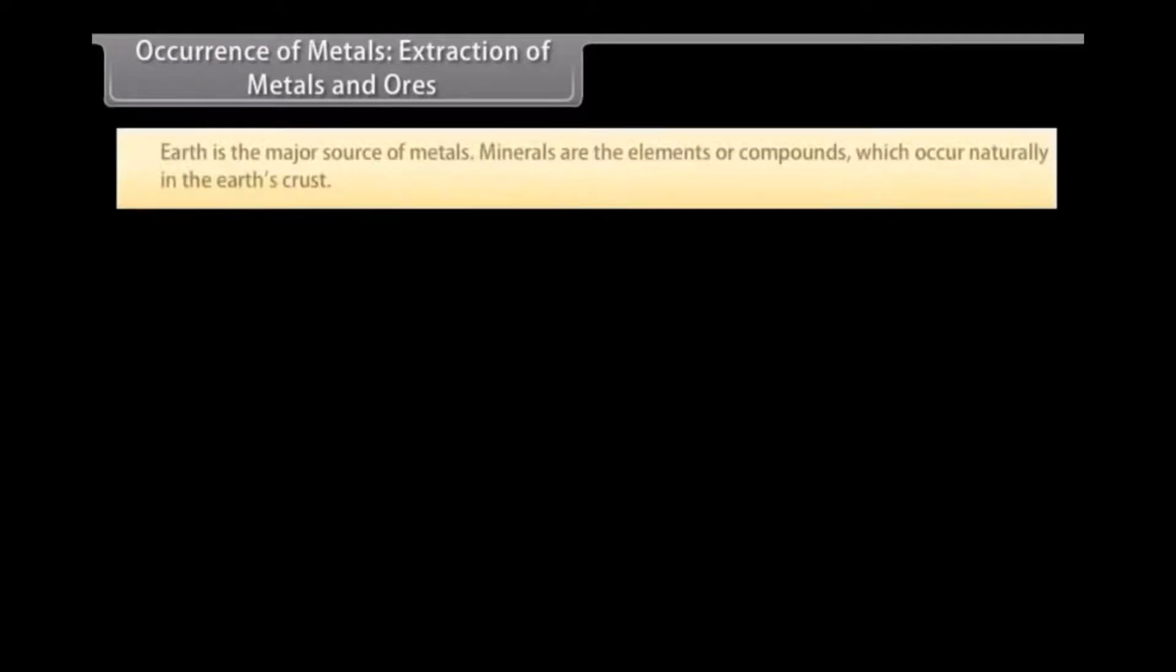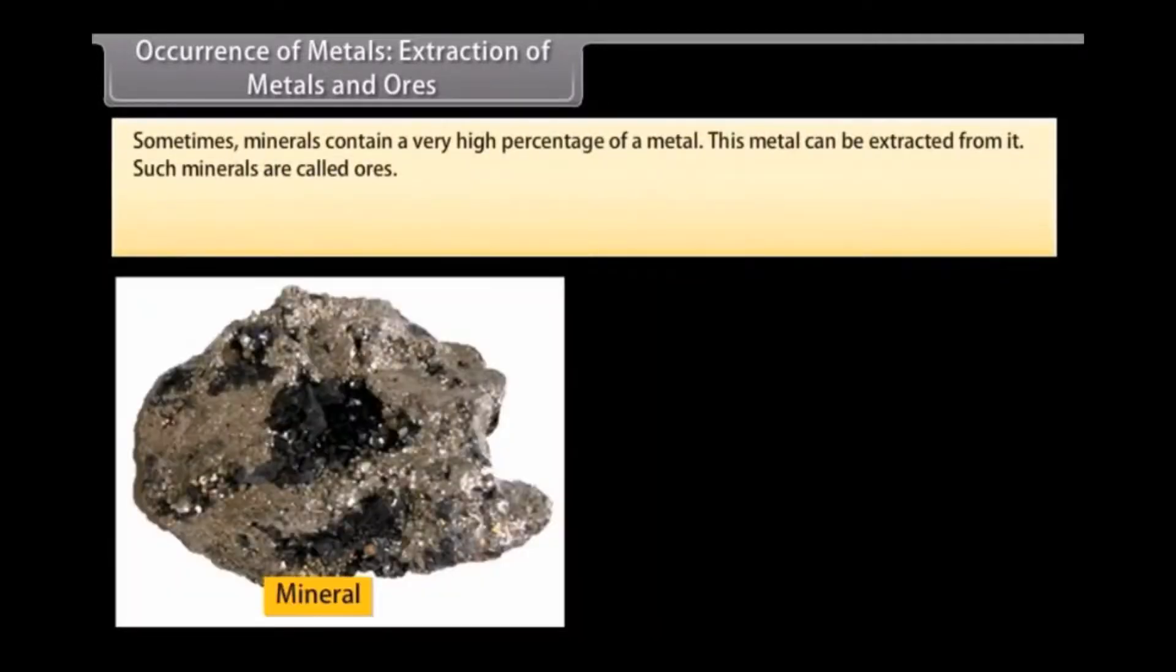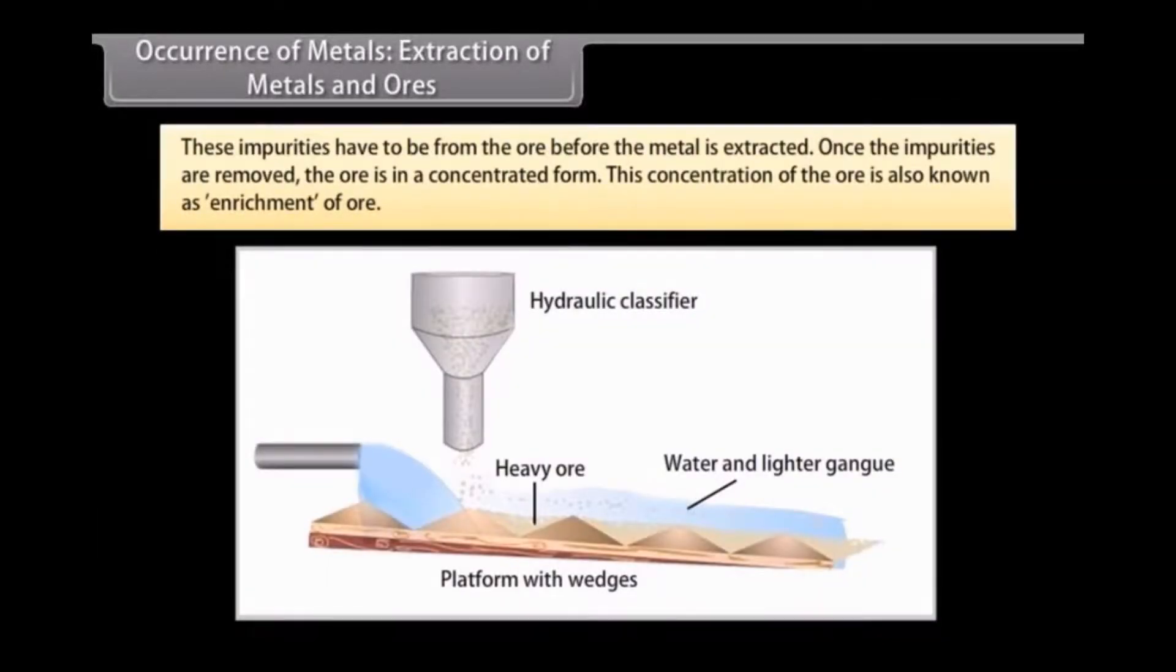Occurrence of Metals: Extraction of Metals and Ores. Earth is the major source of metals. However, seawater also contains some soluble salts. Minerals are the elements or compounds which occur naturally in the earth's crust. Sometimes, minerals contain a very high percentage of a metal. This metal can be extracted from it. Such minerals are called ores. Ores are impure metals that contain a large amount of sand and rocky material. These impurities in the ore are called gangu. These impurities have to be removed from the ore before the metal is extracted. Once the impurities are removed, the ore is in a concentrated form. This concentration of the ore is also known as enrichment of ore.